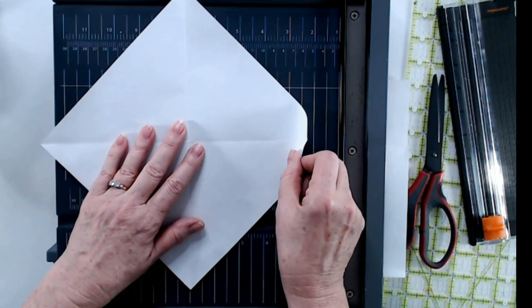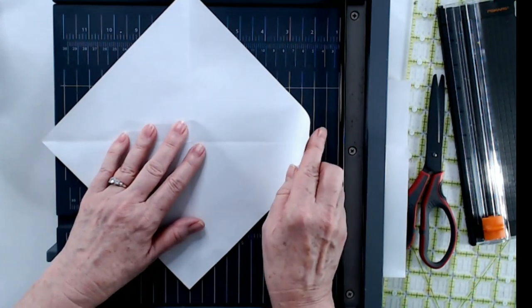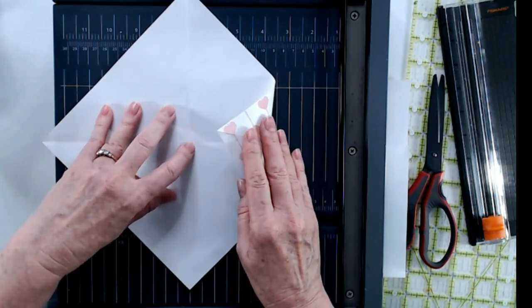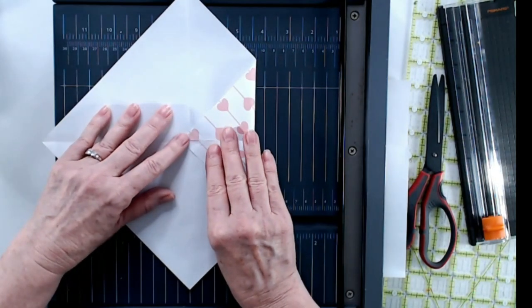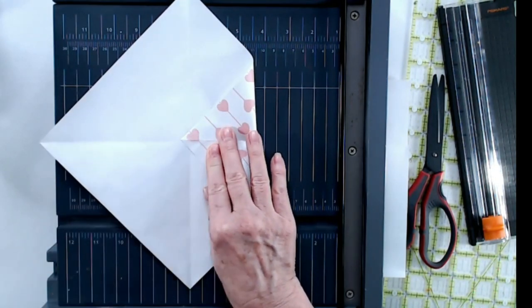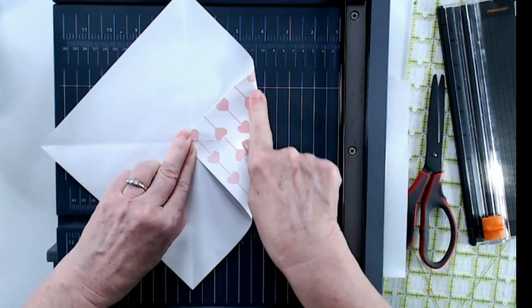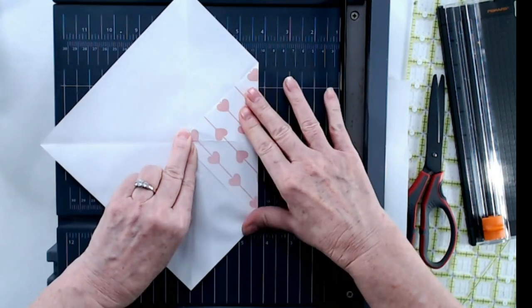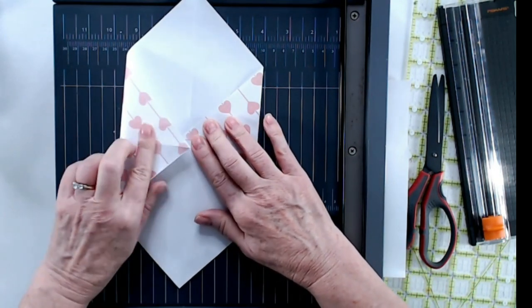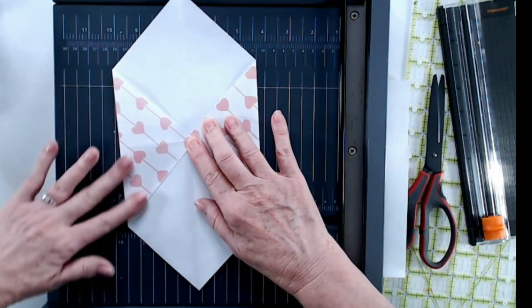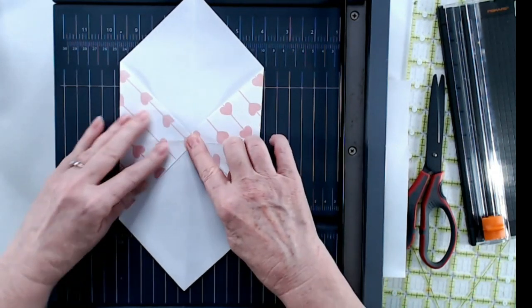I want you to take the right side. We're going to fold it in just past that little where the two lines meet. Just past a teeny weenie bit. Can you see that? So there's where the line is and I'm just coming over just a tiny bit. So these are going to be the sides of your envelope. I'm going to do the same thing on the other side. Pretty simple. Just pass that line so that they actually are touching.